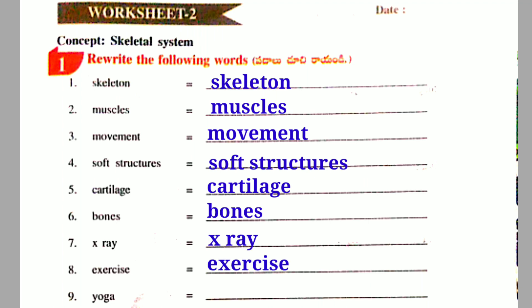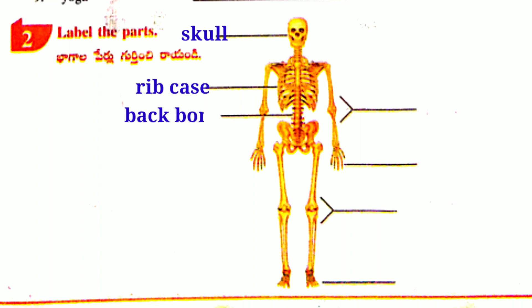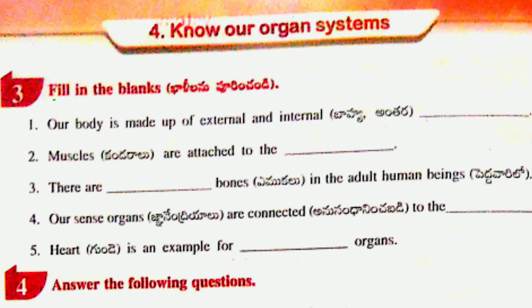Exercise, Yoga. Second activity: Label the parts. Skull, Ribcage, Backbone, Elbow, Hand, Knee, Foot. Third activity.